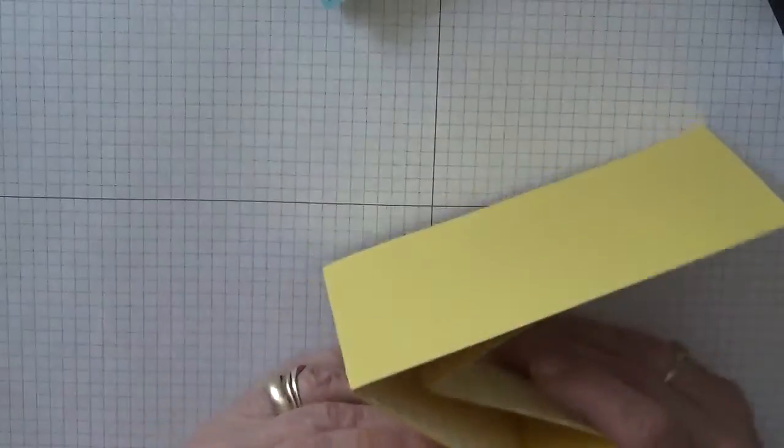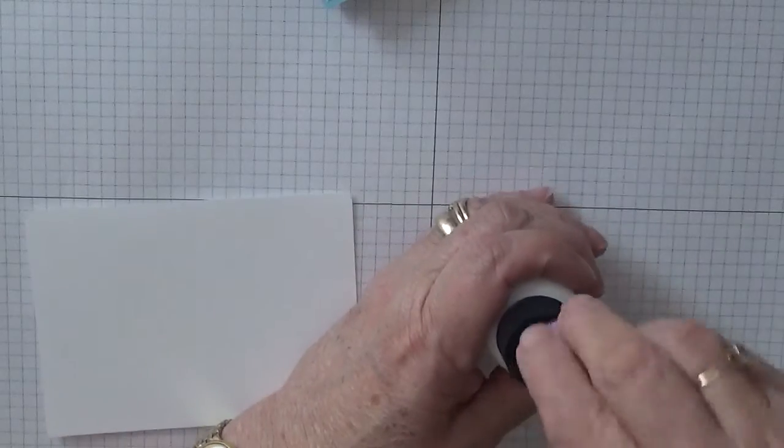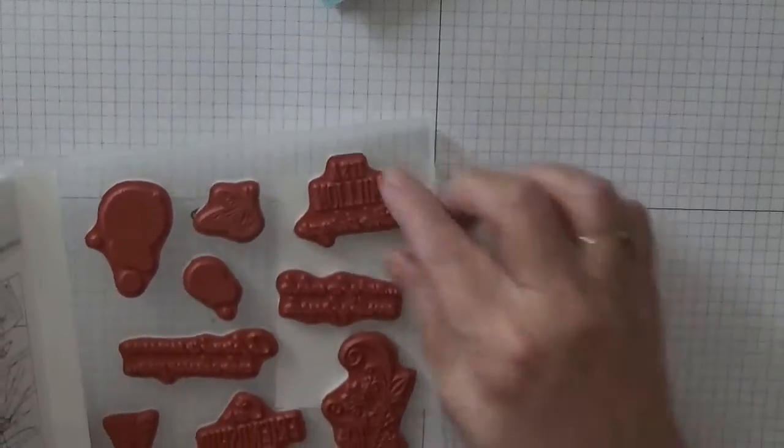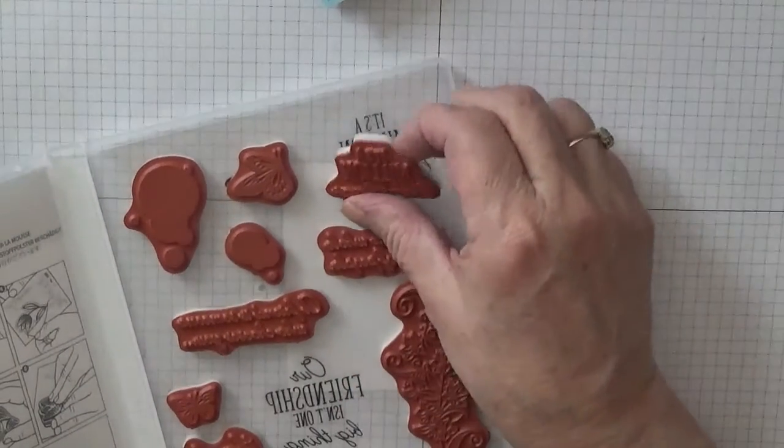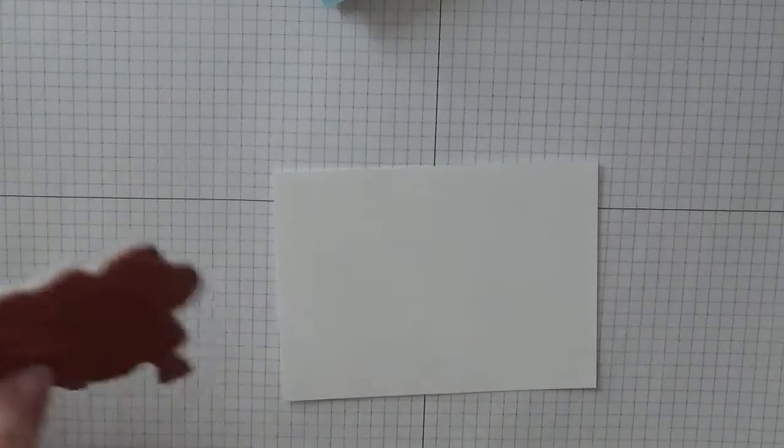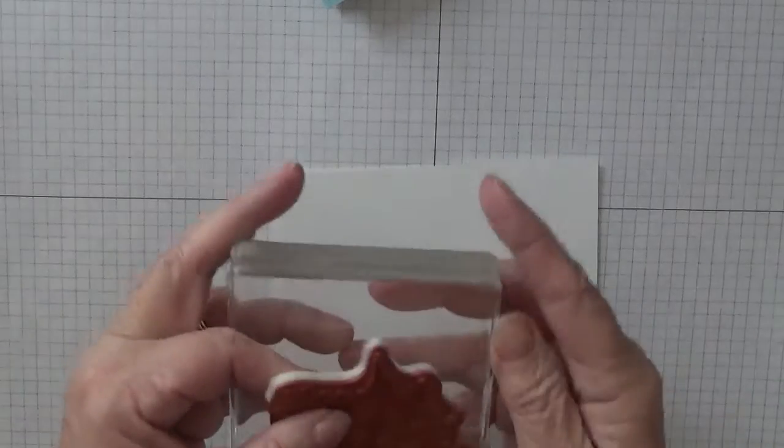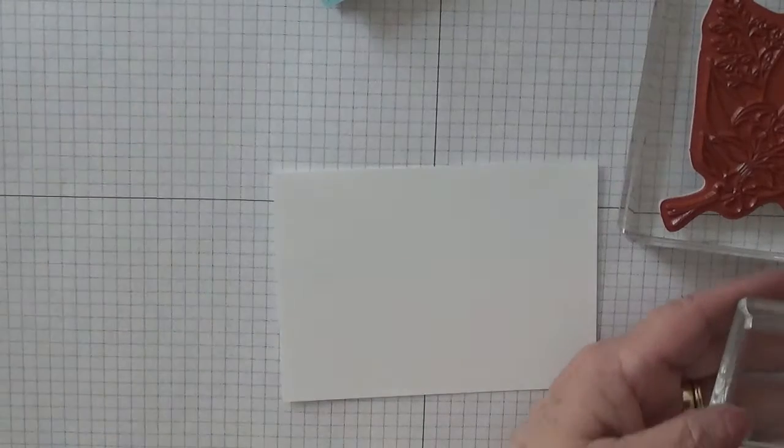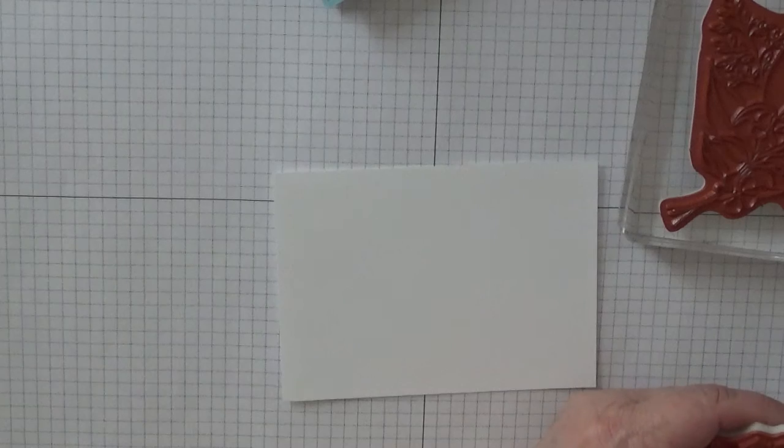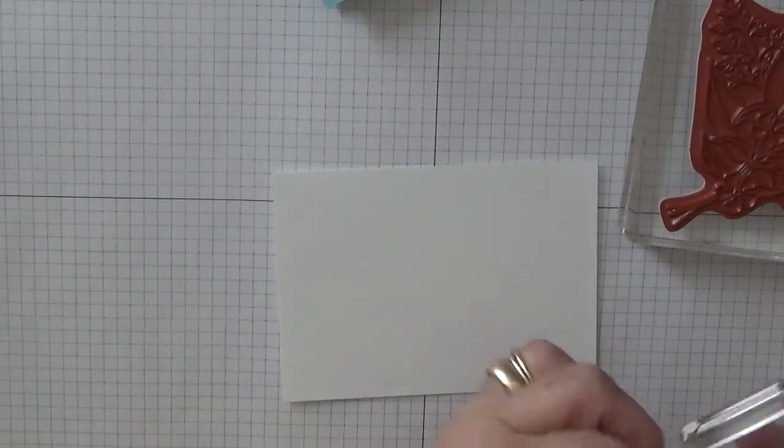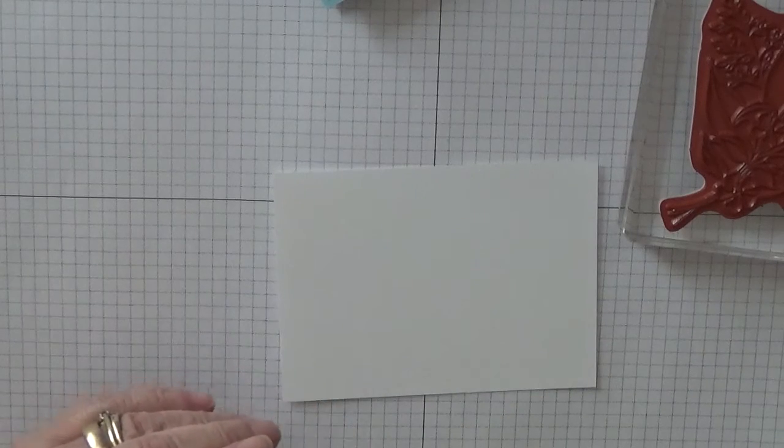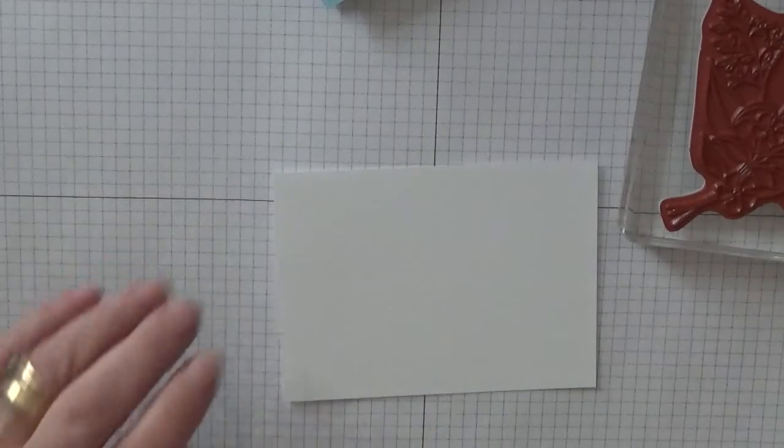First of all we need to stamp. Put my lid on. And I've got no stamps out. So I want this one and that one, and I want this one. Put that on there, that one on there, and that one on there, and that one on there.